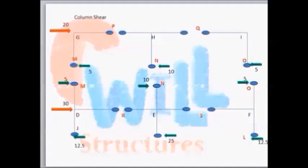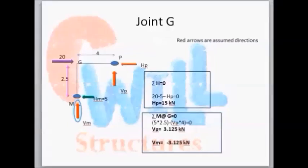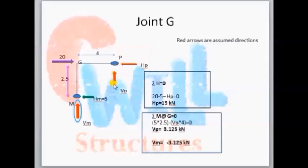Let's take joint number G. We have to consider only three points to solve joint G: G, P, and M, where P and M are hinges. At G there is an external force of 20 kN. We assume the direction of all forces — for point P there are two forces acting, one horizontal and one vertical, denoted as HP and VP respectively.